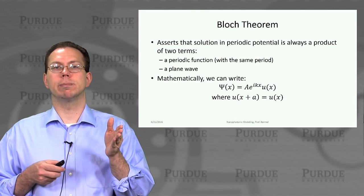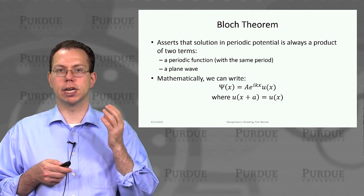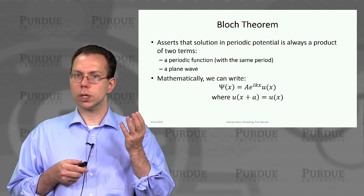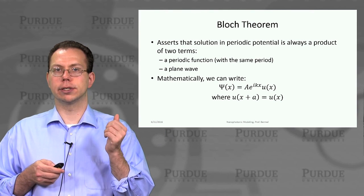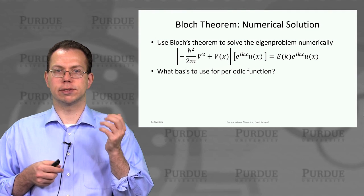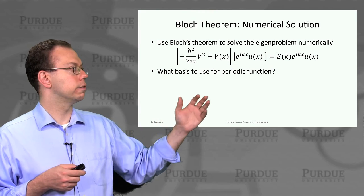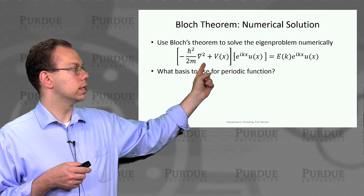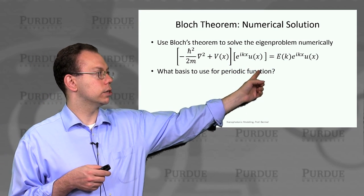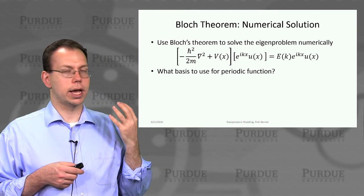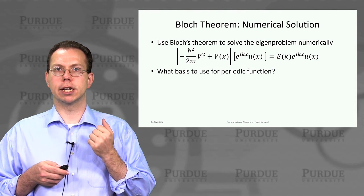This is different from what we might have guessed, which was just that the whole solution is u of x. We have to add the plane wave as well, because although k could be zero — giving us a solution like u of x — there could also be a non-zero k, which is also a reasonable solution. So that's very important. The question then becomes how do we start to solve the Schrödinger equation using this Bloch solution. We write down the Hamiltonian times the Bloch solution equals the energy at a given k times the Bloch solution, and the question is what kind of basis should we use for this periodic function.